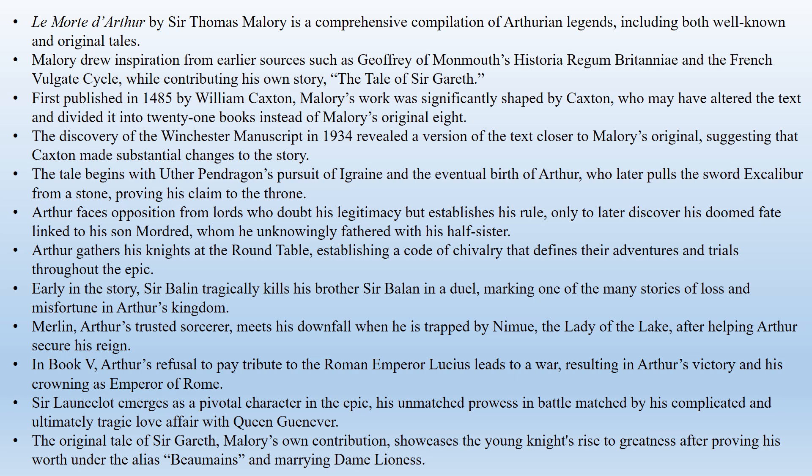Despite these variations, the core story remains a captivating tale of heroism, betrayal, and tragedy. The story begins with Uther Pendragon, the king of England, who desires Igraine, the wife of the Duke of Tintagel. With the help of the sorcerer Merlin, Uther disguises himself and conceives a child with Igraine, who later becomes King Arthur. After Uther's death, chaos ensues in England until young Arthur pulls the magical sword Excalibur from a stone, proving he is the rightful king.